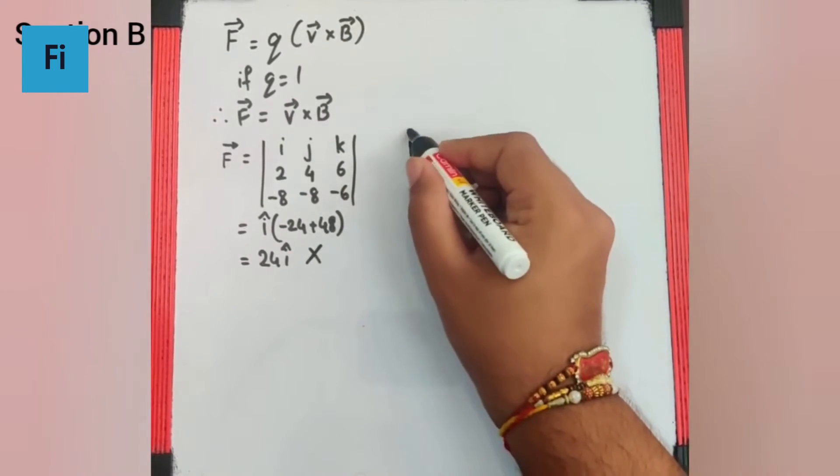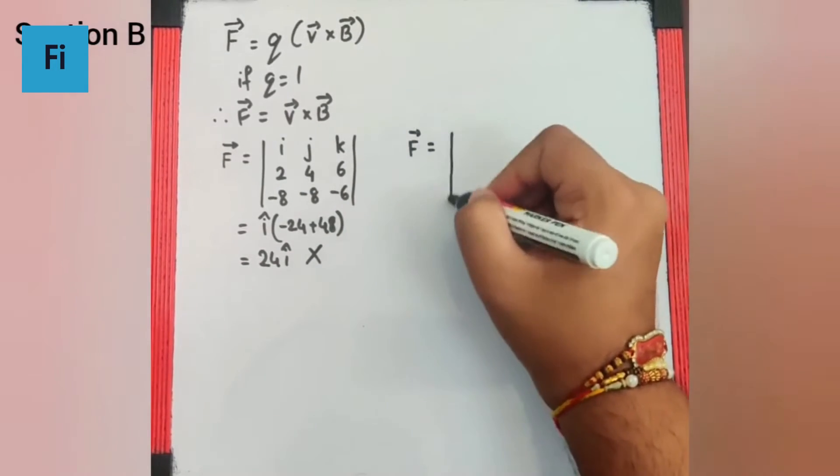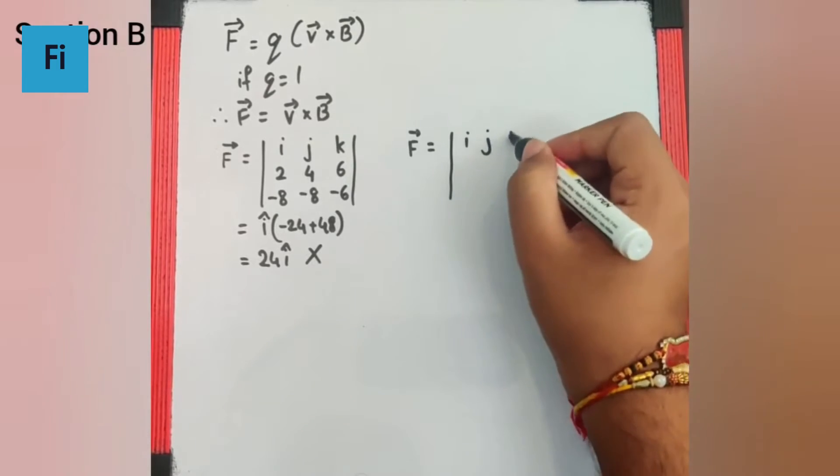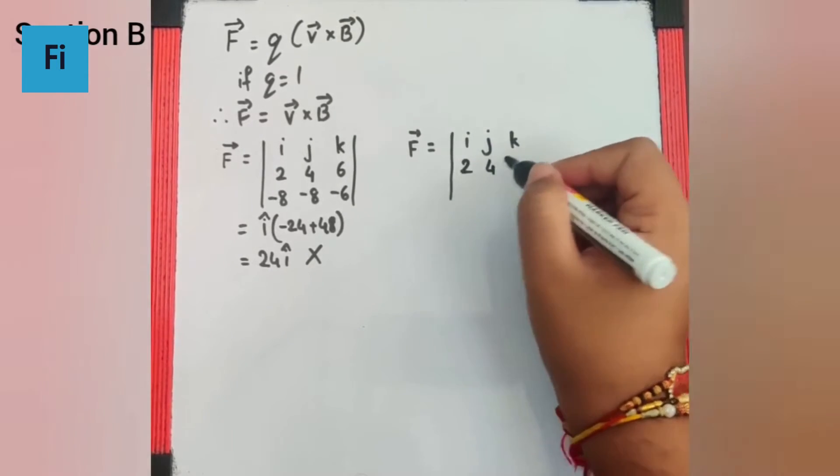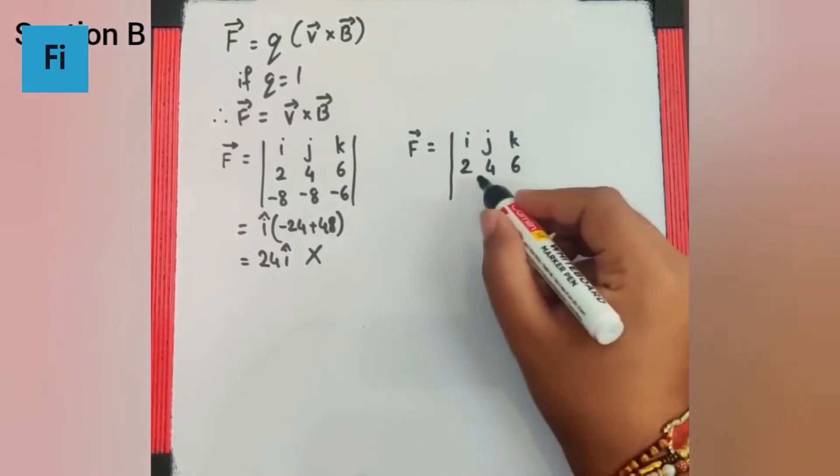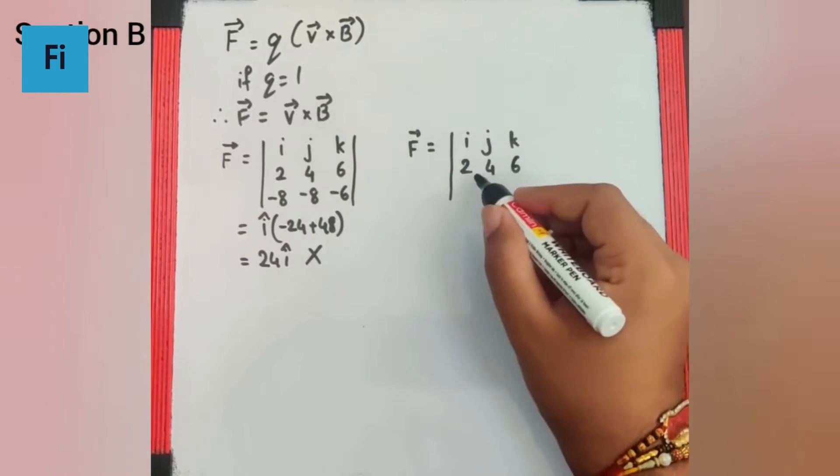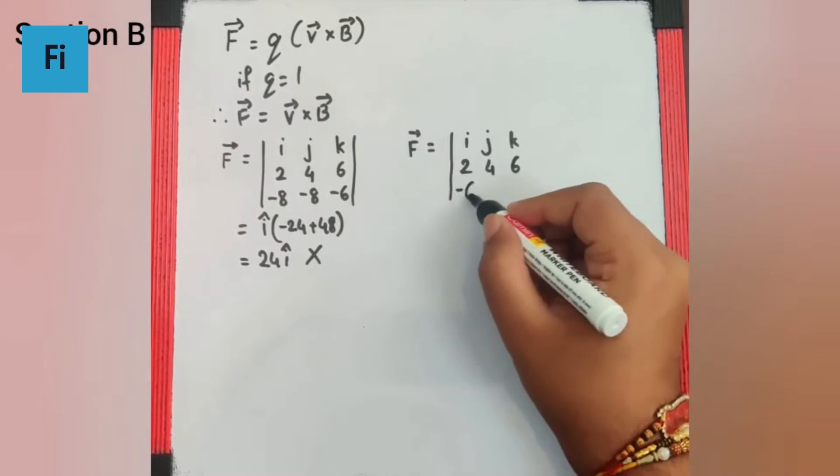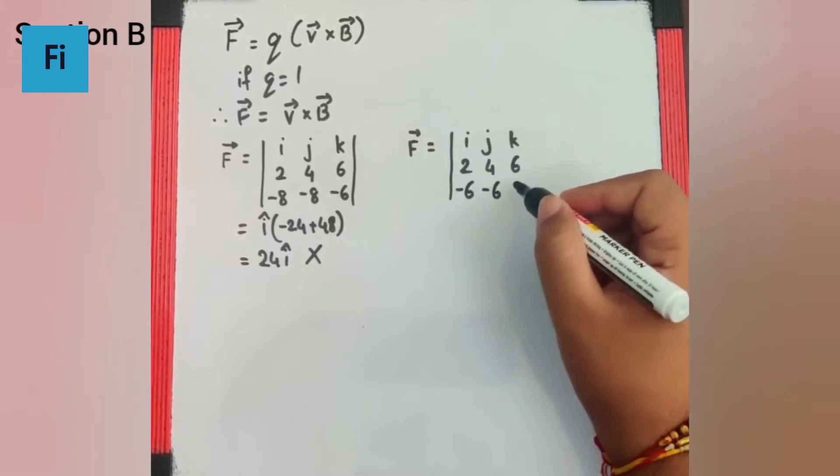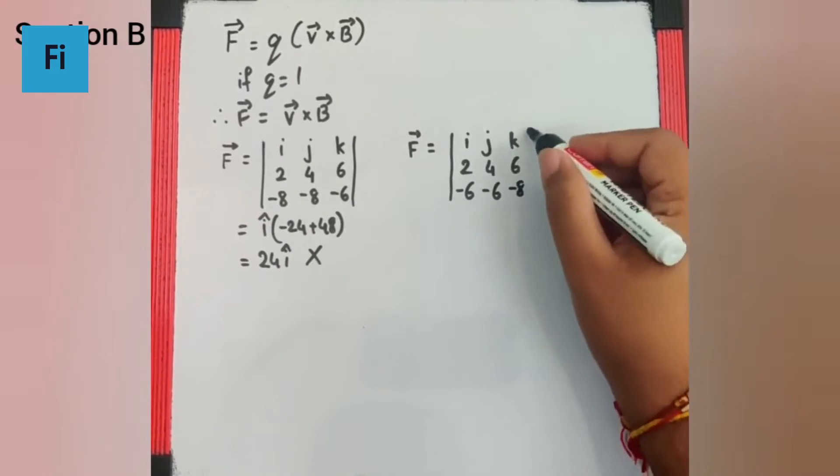Let's try the next option. So F bar is going to be i cap j cap k cap, 2i cap 4j cap 6k cap for velocity, and for B the second option gives minus 6i cap minus 6j cap and minus 8k cap.